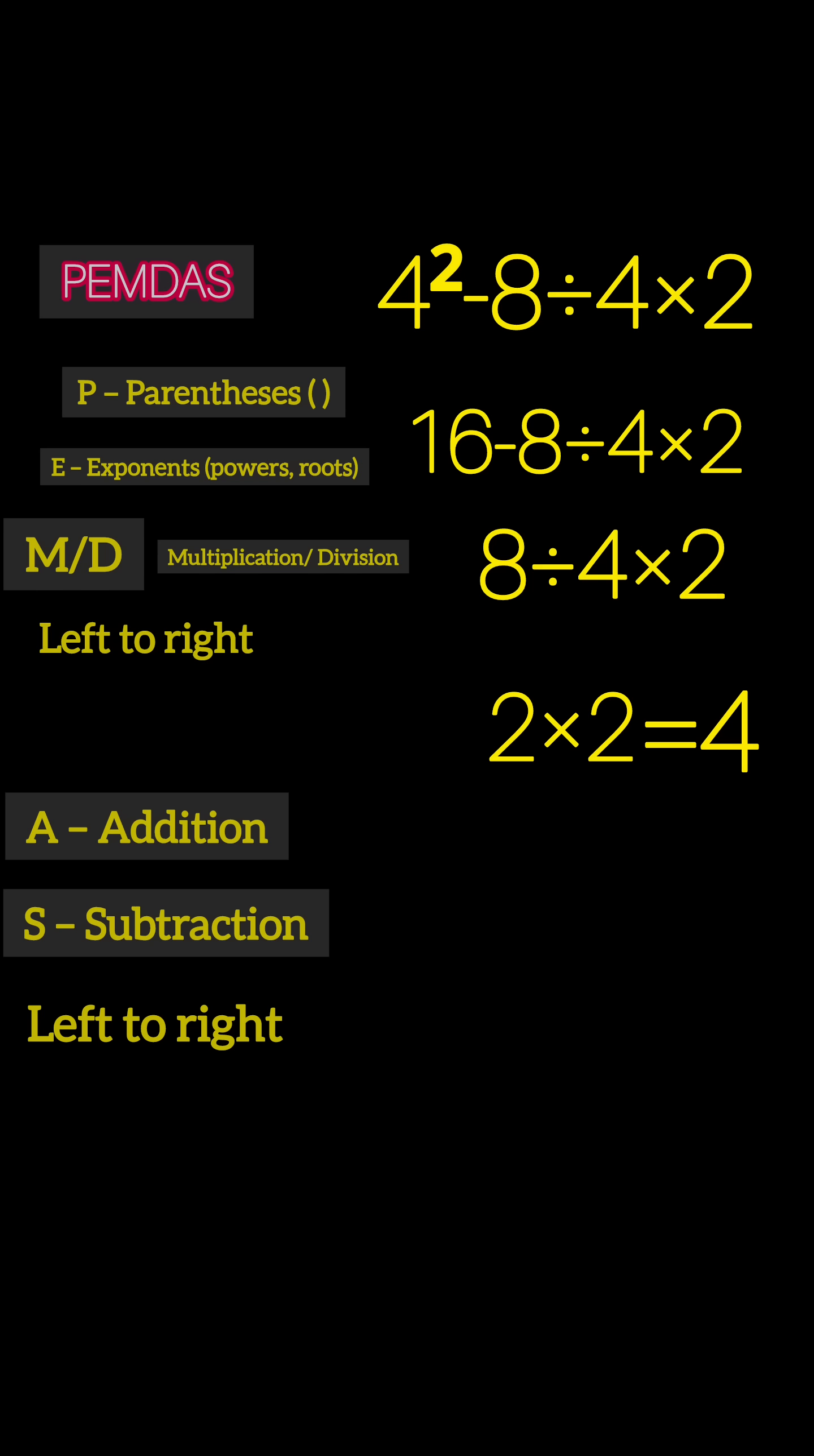So what is the right way to do it? You've got to follow both order of operations and left to right when you have equals. Let's solve it properly. Exponents first: 4² = 16.